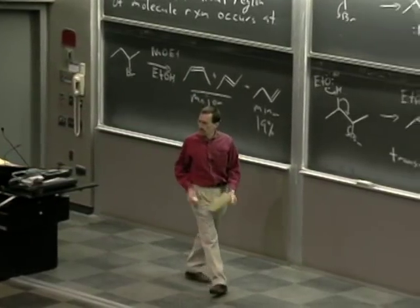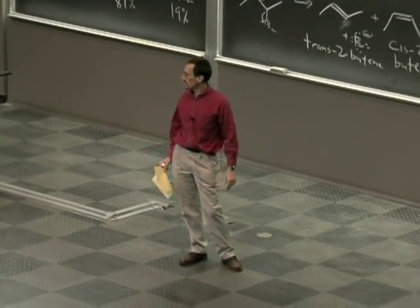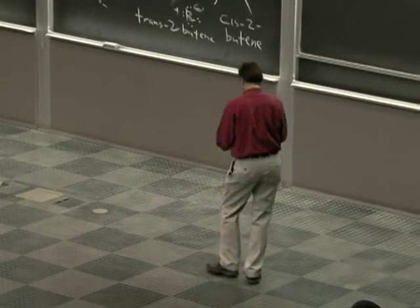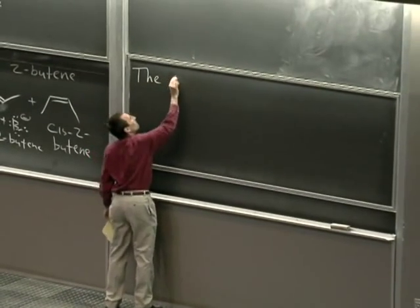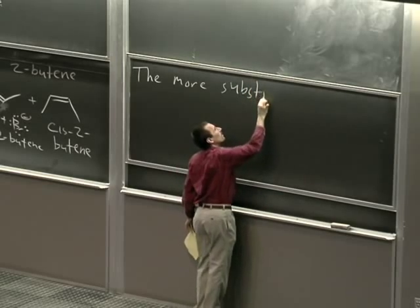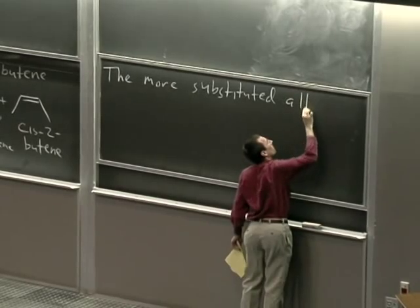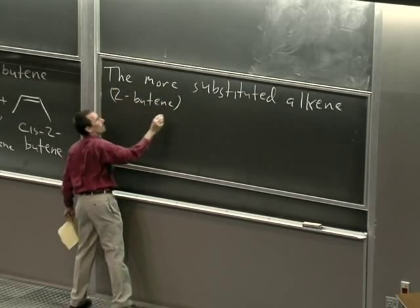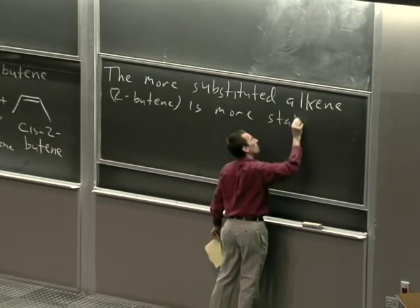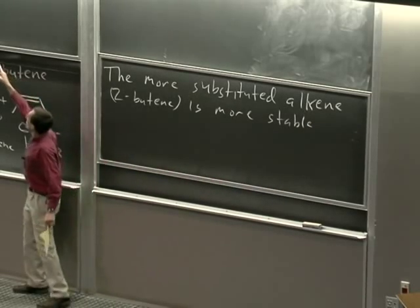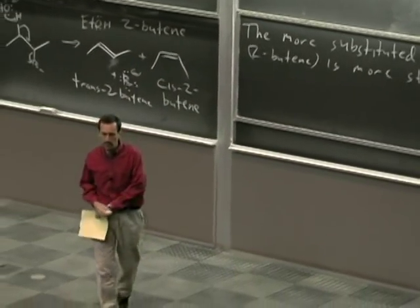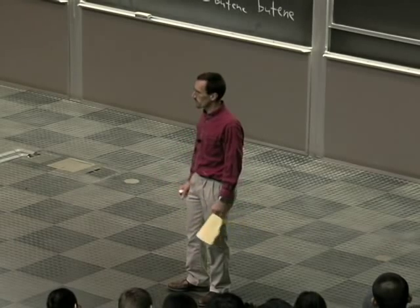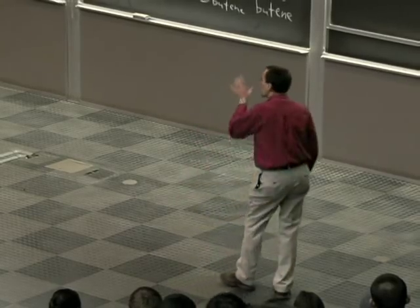Let's talk about the fact that we're forming four times as much 2-butene as 1-butene. More substituted alkenes are more thermodynamically stable. In 1-butene we have one alkyl group and three hydrogens, so one substituent on the double bond. In 2-butene, we have two methyl groups on the double bond — two substituents — and so it's more substituted and more thermodynamically stable.